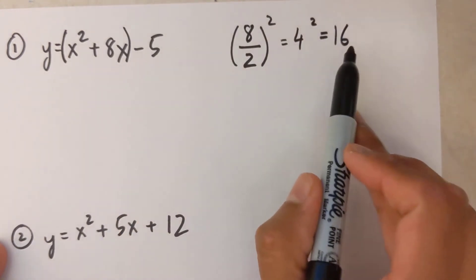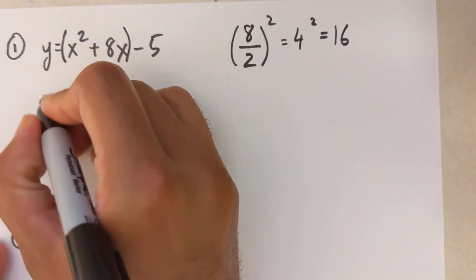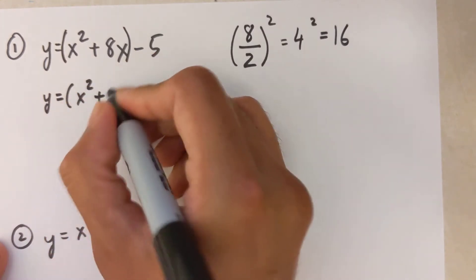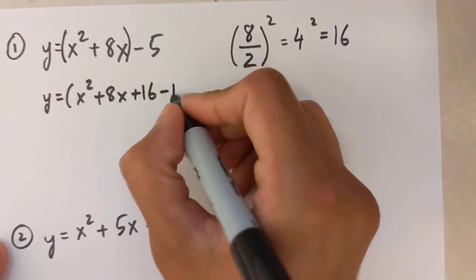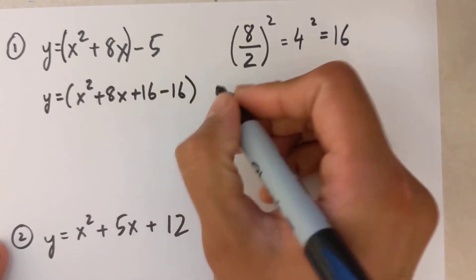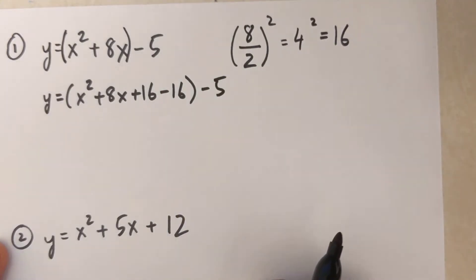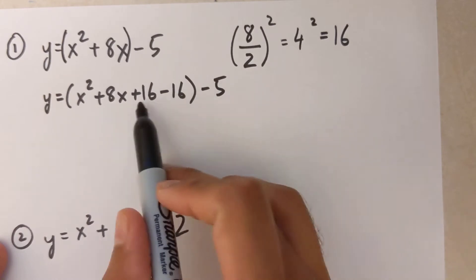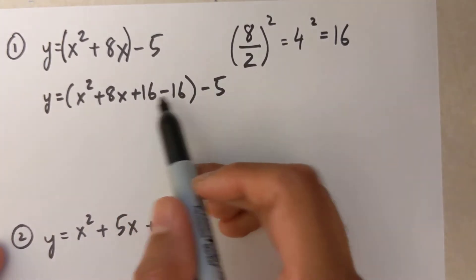Now I'm going to add and subtract that number inside the bracket, so y equals x-squared plus 8x plus 16 minus 16 minus 5. As you can see, I've added and subtracted the same number, so technically the equation has not changed at all.